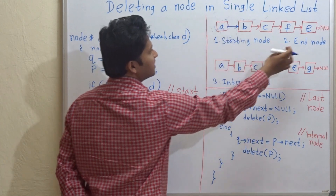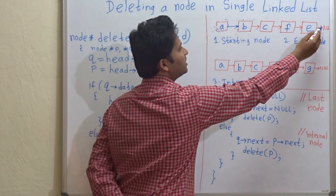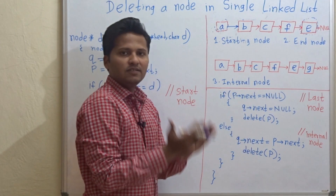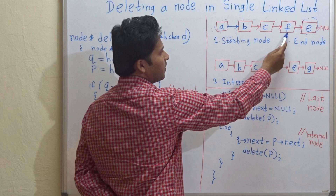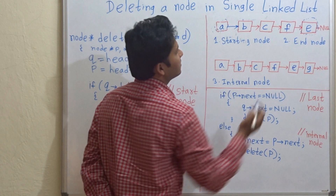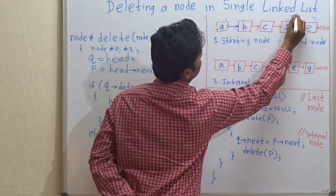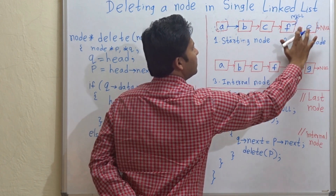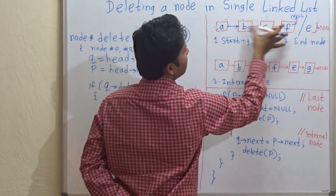The second category: the node can be an end node. The end node is the node which points to null — the last node. For deleting this node, you have to make the second last node, that is F, point to null. So this link from the second last node should now point to null, and then that node will be deleted.